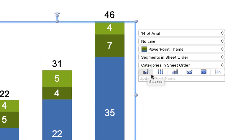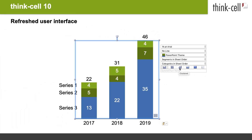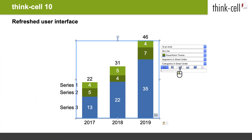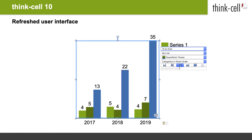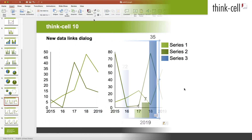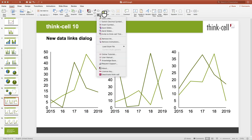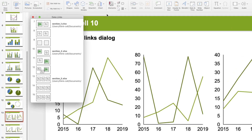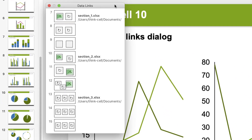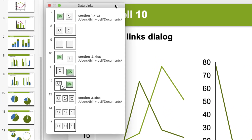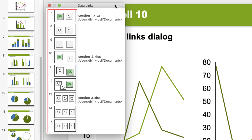We also use icons instead of drop-downs in the floating toolbar whenever possible. For example, to change the chart type, you now click the corresponding icon instead of choosing text from a drop-down. We have also completely reworked the data links dialog. It now provides a much better overview of the data links in your presentation by using larger thumbnails, which closely resemble PowerPoint slide sorter.